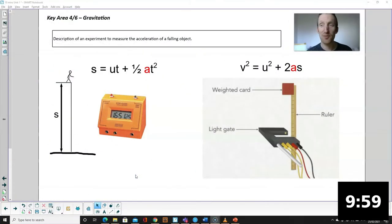Okay, first off gravitation. So we need to describe an experiment to measure the acceleration of a falling object. A couple of options for you. You could drop an object off a known height and time how long it takes to hit the floor. If you know the displacement, if you know the starting velocity which will obviously be zero if you drop it, you can rearrange it to find the acceleration.